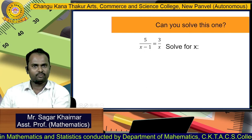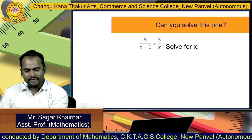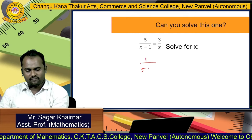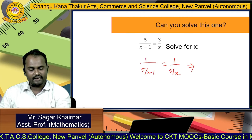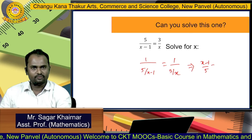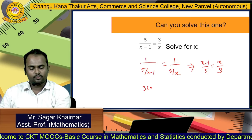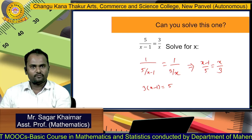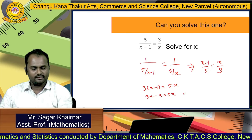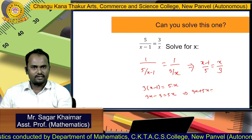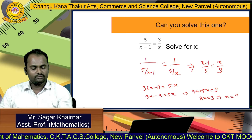Suppose we have 5 divided by (x minus 1) equal to 3 by x. We can find the value of x using the reciprocal property. So we write (x minus 1) divided by 5 is equal to x divided by 3. Now using the cross product property, we get 3 into (x minus 1) is equal to 5 into x. So 3x minus 3 is equal to 5x. Solving, we get 3x minus 5x equal to 3, so negative 2x equals 3, which gives x equal to negative 3 by 2. Wait — rearranging: 3x minus 3 = 5x gives negative 2x = 3, so x = negative 3/2. The transcript states x equal to 3 by 8.